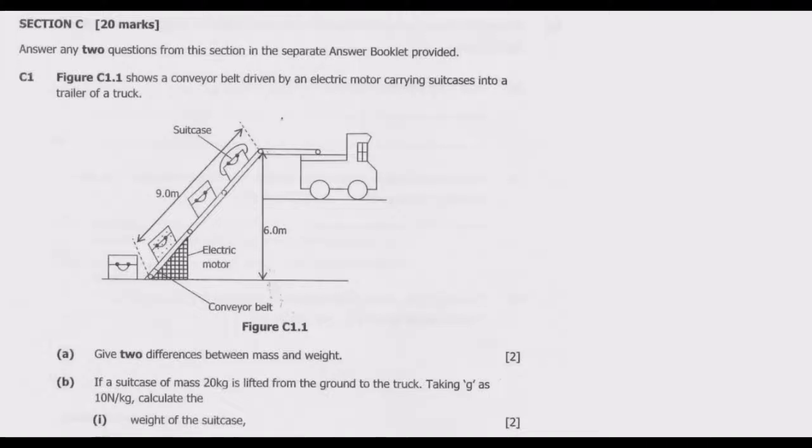Welcome viewers to another episode on ASEL G12 exams. In this episode we continue looking at the 2021 GCE science paper 1. Now we are looking at section C where you are expected to answer two questions out of three questions, each carrying 10 marks. Let's look at question C1. Figure C1.1 shows a conveyor belt driven by an electric motor carrying suitcases into a trailer of a truck.